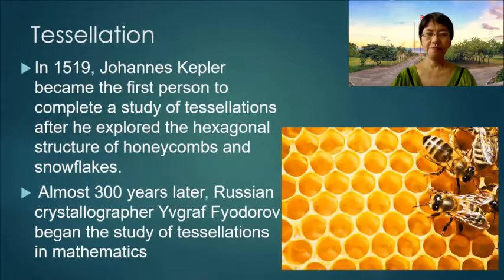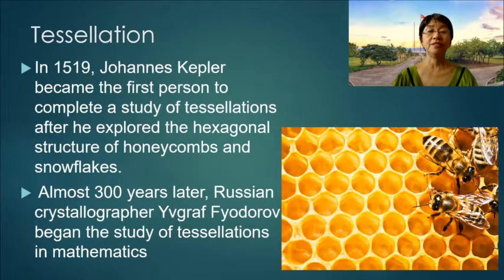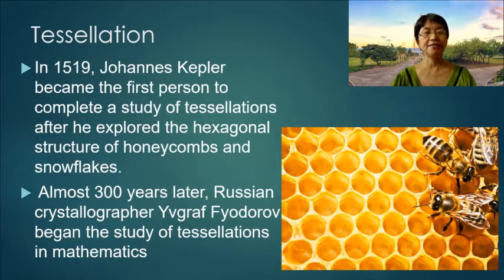In 1519 Johannes Kepler became the first person to complete a study of tessellations after he explored the hexagonal structure of honeycombs and snowflakes. Almost 300 years later, Russian crystallographer Yevgraf Fyodorov began the study of tessellations in mathematics.